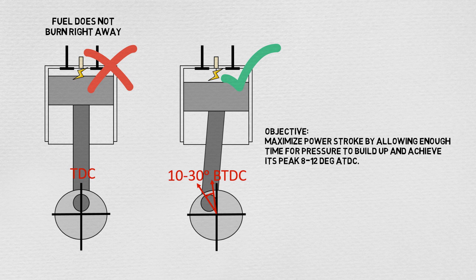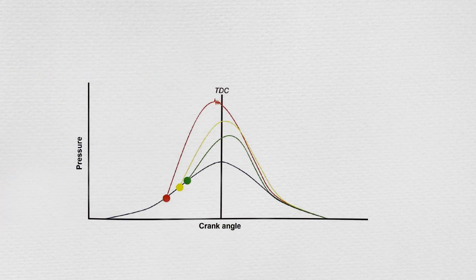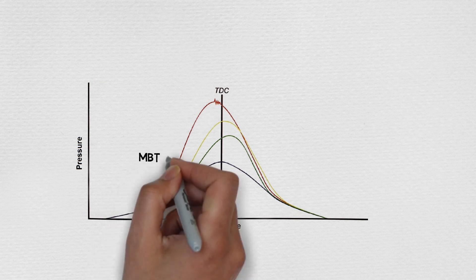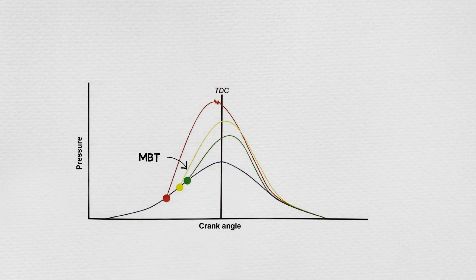The objective behind this is to get the most out of every power stroke by allowing enough time for pressure to build up and achieve its peak approximately between 8 and 12 degrees after top dead center. The spark advance value that yields the highest torque is known as MBT and it stands for maximum brake torque timing or minimum timing for best torque.